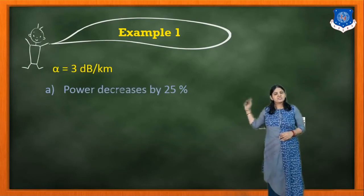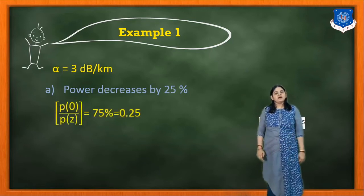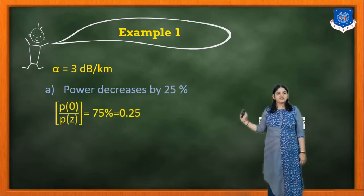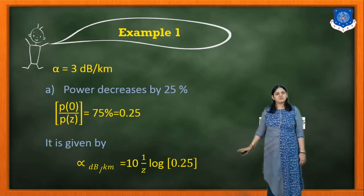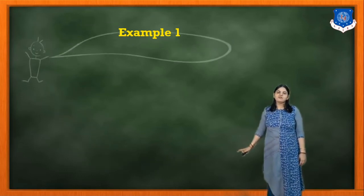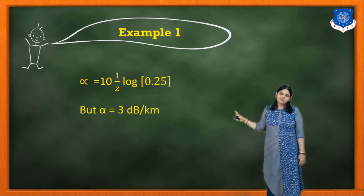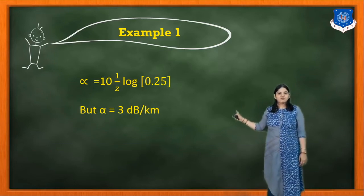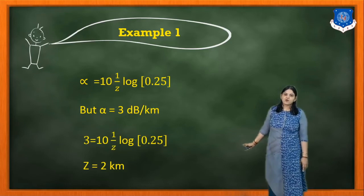For the second part of Example 1, α = 3 dB/km and power decreases by 25%, so P0/P(Z) = 0.75, meaning P(Z)/P0 = 0.25. Using α(dB/km) = (10/Z) × log(P0/P(Z)), we put α = 3 and solve: 3 = (10/Z) × log(0.25). The answer is Z = 2 kilometers.